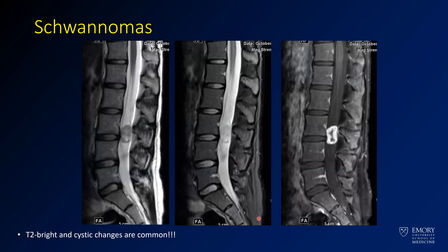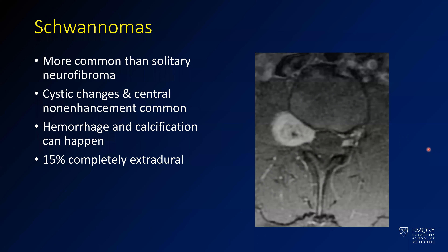Here's an example of a schwannoma — an intradural extramedullary lesion. All lumbar lesions below the conus are extramedullary by definition, since there's no spinal cord down there. Here you see a well-defined lesion in the thecal sac at L3-L4 with avid enhancement and a little cystic component — a very common location and appearance for a schwannoma. Solitary schwannomas are more common than neurofibromas. They tend to have enhancement and some cystic changes in the center; hemorrhage and calcification can happen but are less common.